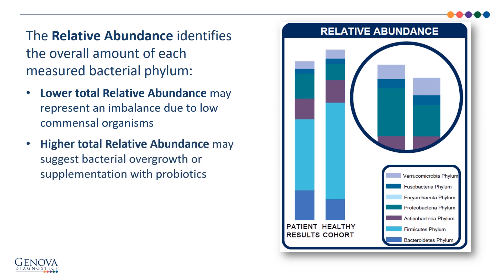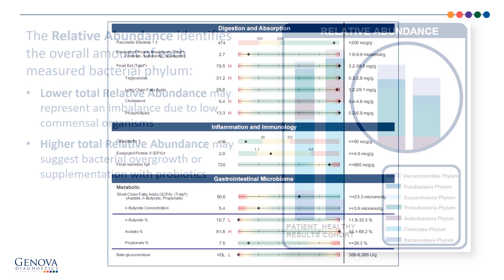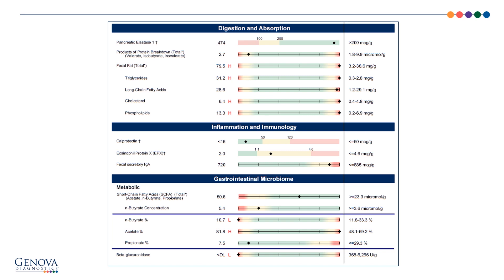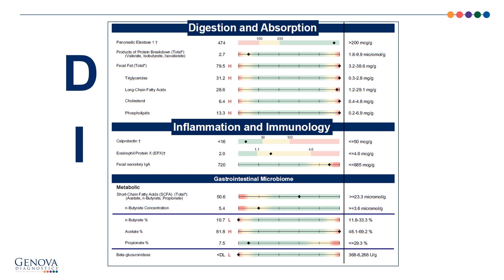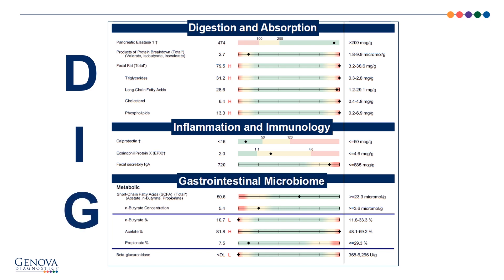A higher total abundance may suggest bacterial overgrowth or supplementation with probiotics. The second page of the report is organized in the DIG format, separating the biomarkers into three functional areas of digestion and absorption, inflammation and immunology, and the metabolic markers of the gastrointestinal microbiome.